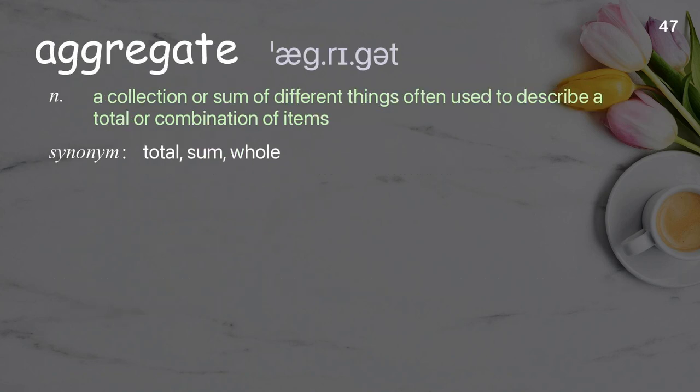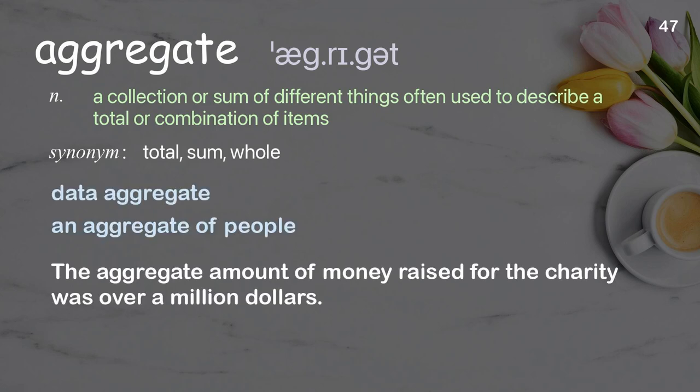Aggregate: a collection or sum of different things, often used to describe a total or combination of items. Examples: data aggregate, an aggregate of people. The aggregate amount of money raised for the charity was over a million dollars.